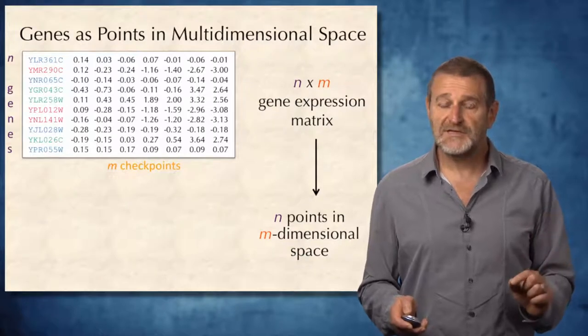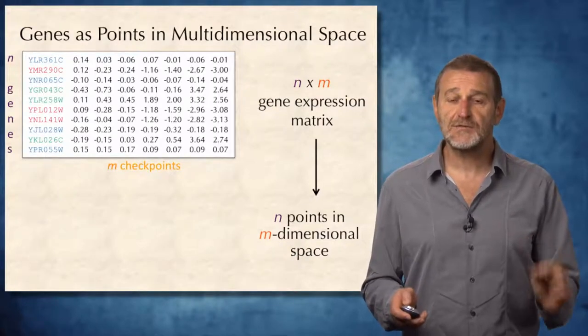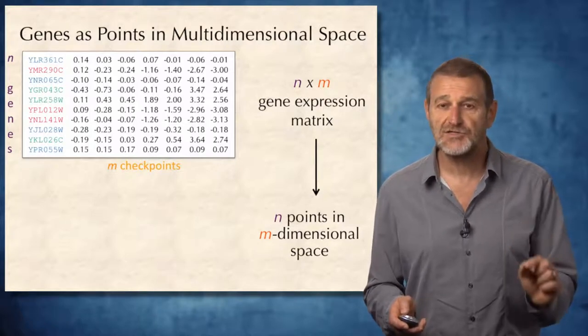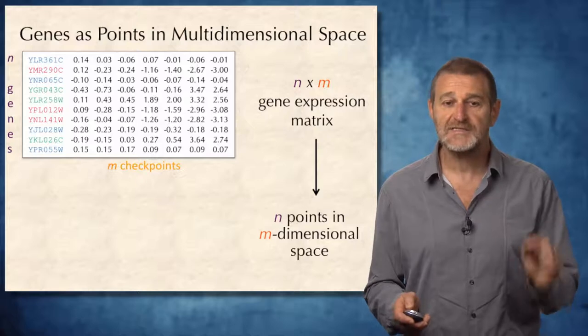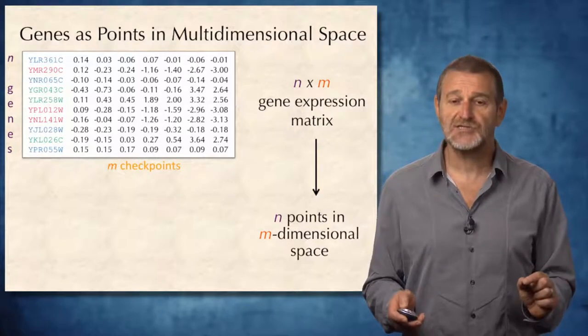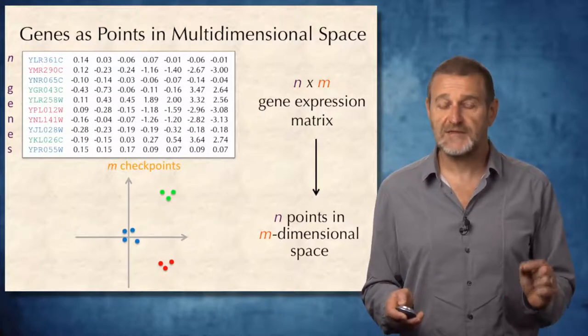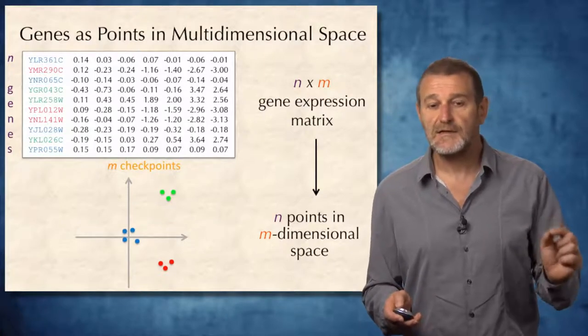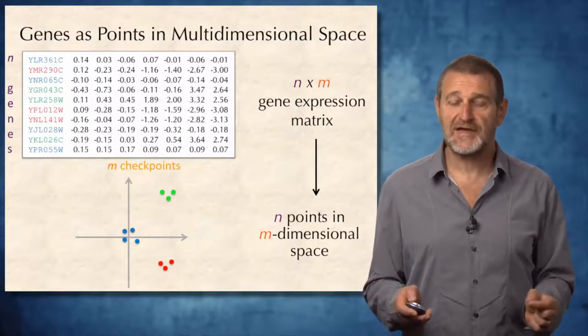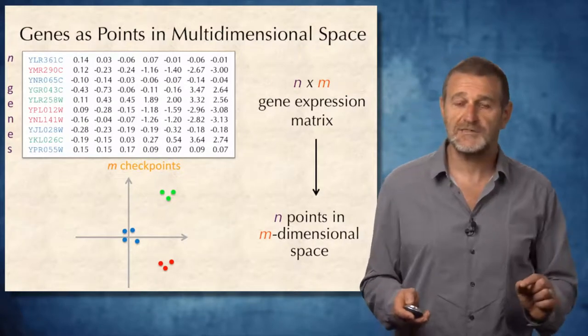We can also represent genes as points in multidimensional spaces, so that an n times m gene expression matrix will turn into n points in m-dimensional space. Our 10 genes turn into these 10 points, and we clearly see that blue points whose expression remains flat cluster together. The same is true for green points and red points.